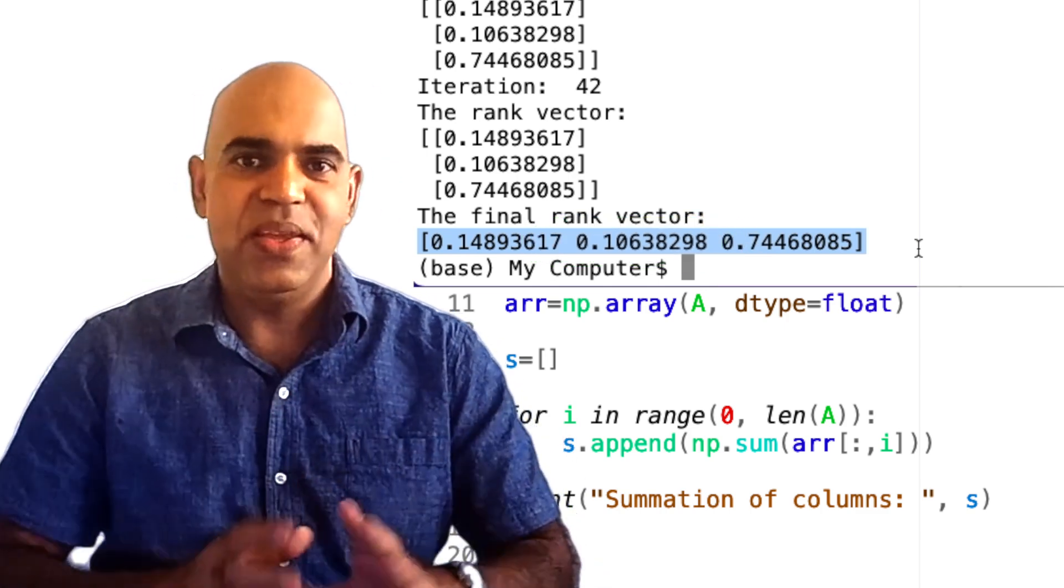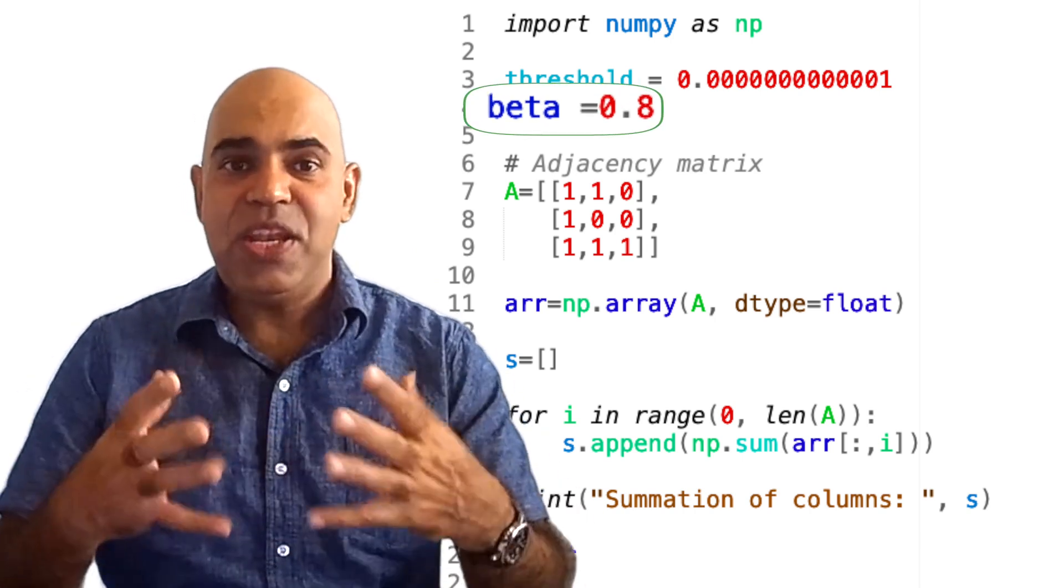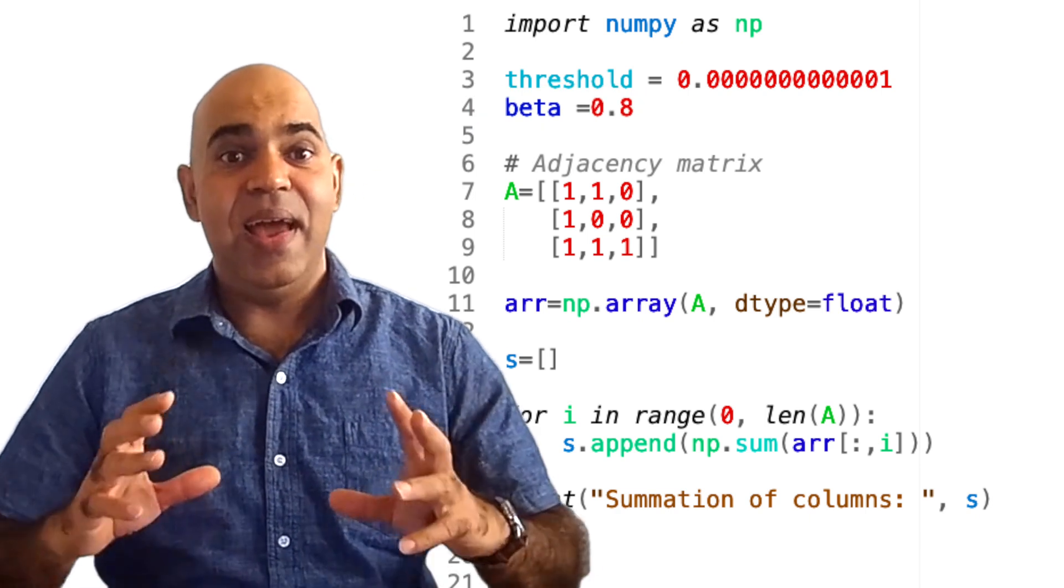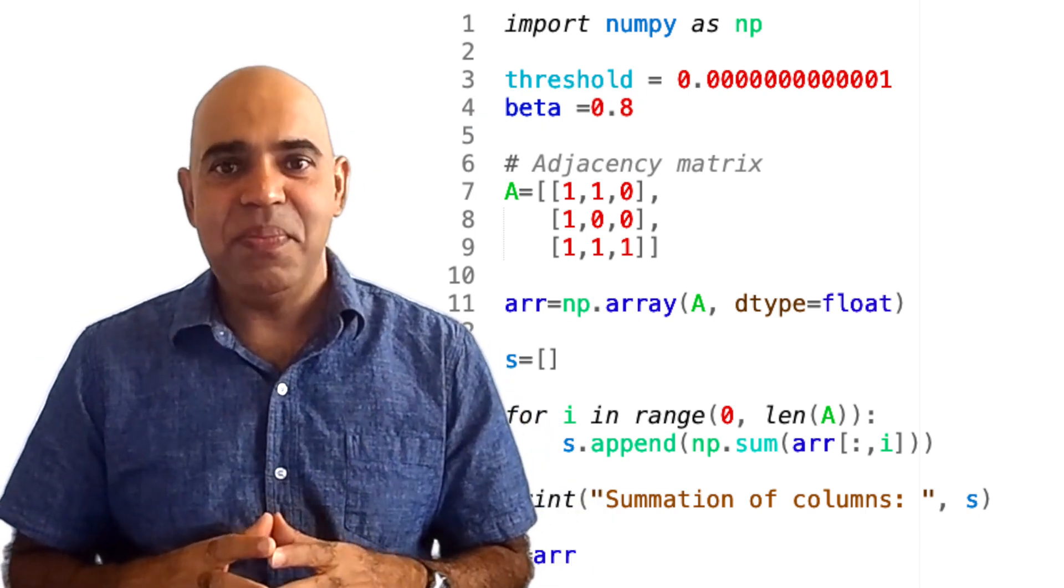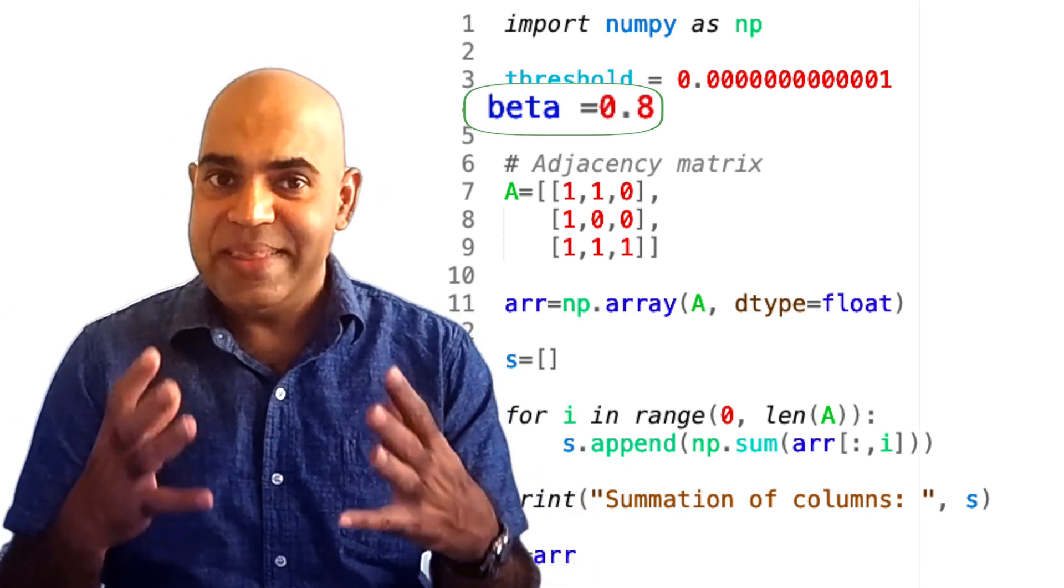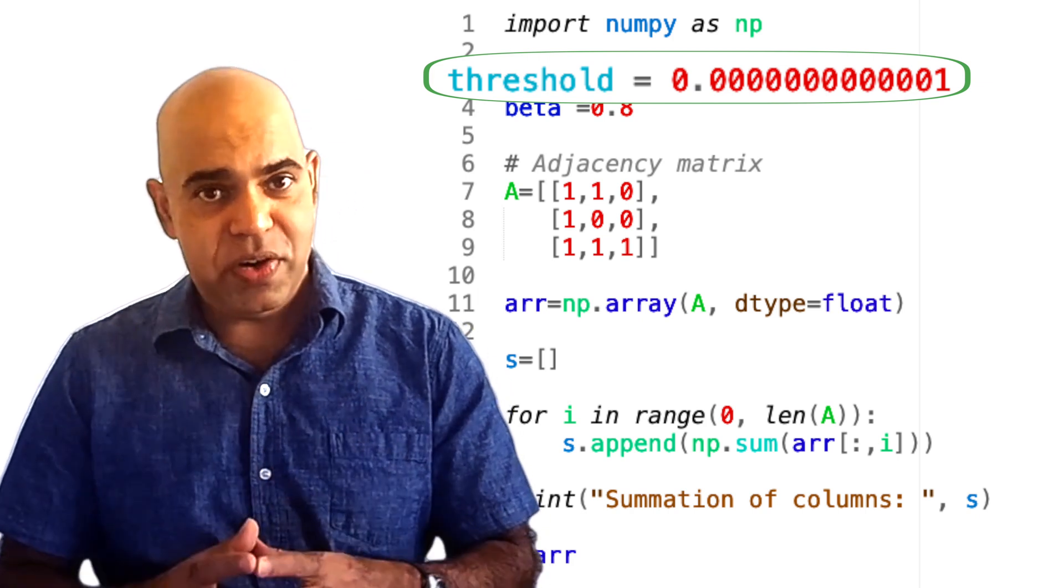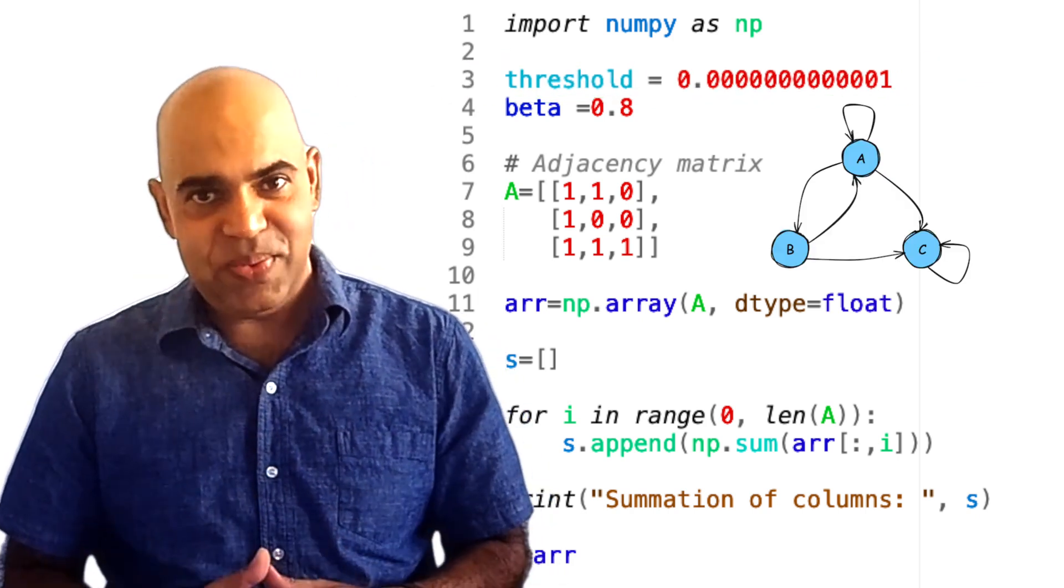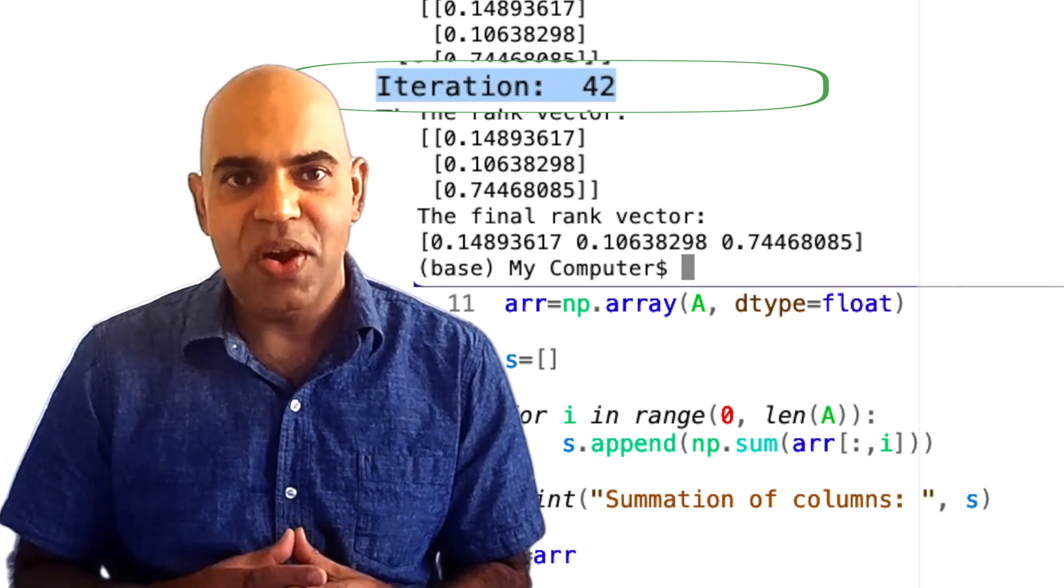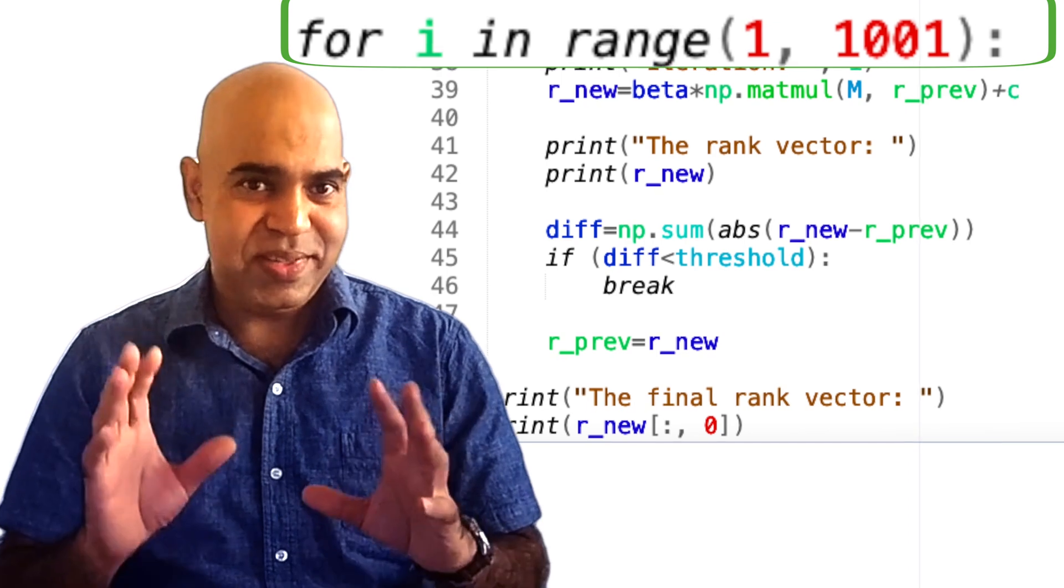Based on the settings we used, beta equal to 0.8 indicates that 80% of the time the surfer will follow a hyperlink and the other 20% of the time the surfer will teleport to a random web page. With this setting of beta, for this threshold of convergence, for this network, we needed 42 iterations to converge, which is way less than 1000 allowed iterations in this loop.